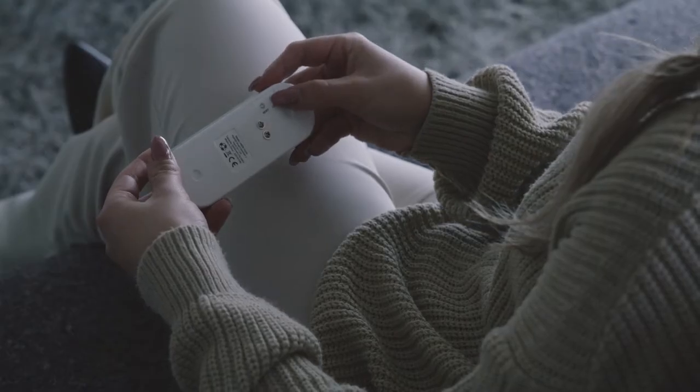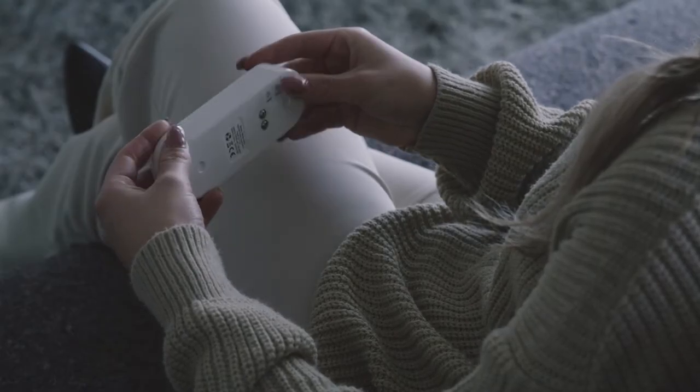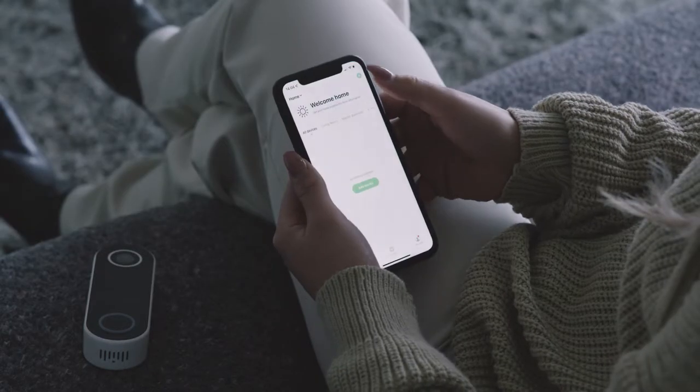Press and hold the on-off button to turn on the doorbell. Make sure the light indicator is blinking red.